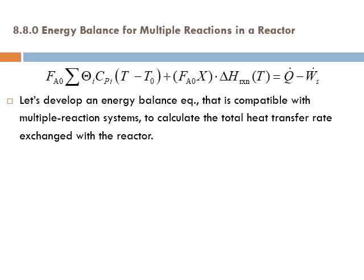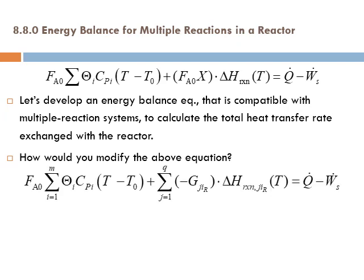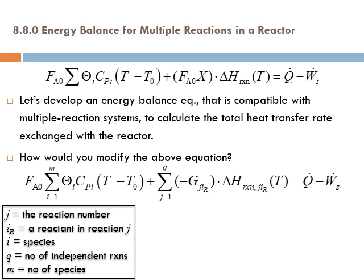We want to develop an energy balance equation that is compatible with multiple reaction systems to calculate the total heat transfer rate exchanged with the reactor. To modify the above equation, you have to sum up the heat released from each of the reactions — we use summation. The summation is over J, where J is the reaction number.